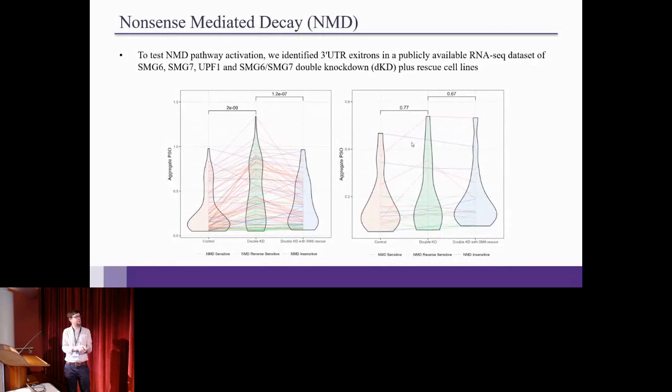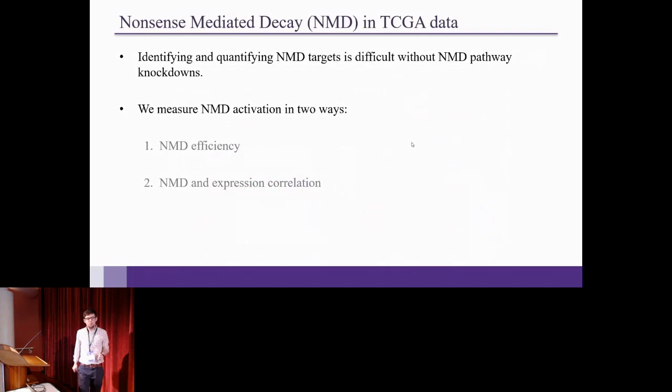You also look at PSO values in both control and double knockdown and double knockdown rescue. And the general trend there is that the PSO values go up in the knockdown and back down in the rescue. And if that's the case, then you should expect that this PSO value is being sensitive to the knockdown, which is the knockdown of the NMD pathway. And you can see on the right, this is the CDS exotrons, and the CDS exotrons aren't sensitive in the same way. So this shows in a sort of knockdown model that 3' UTR exotrons are generally sensitive to NMD.